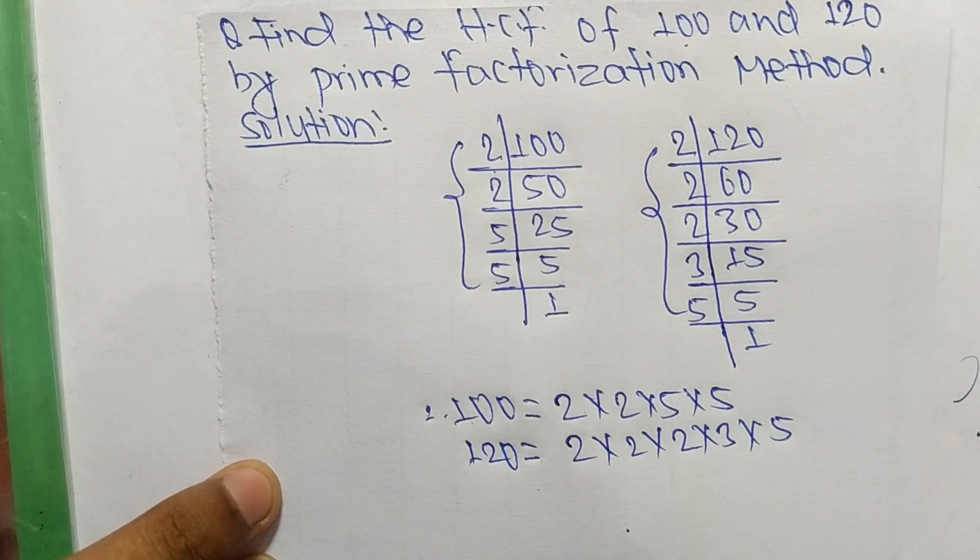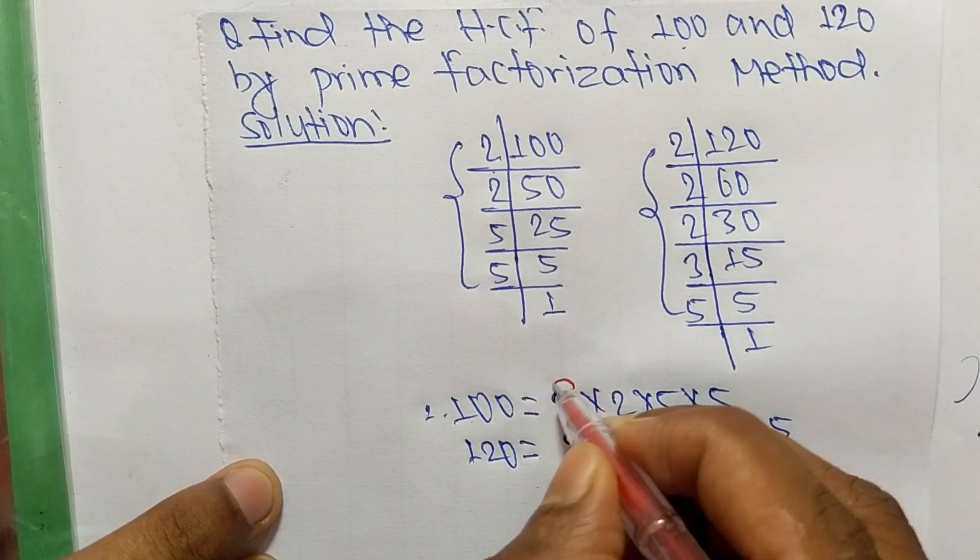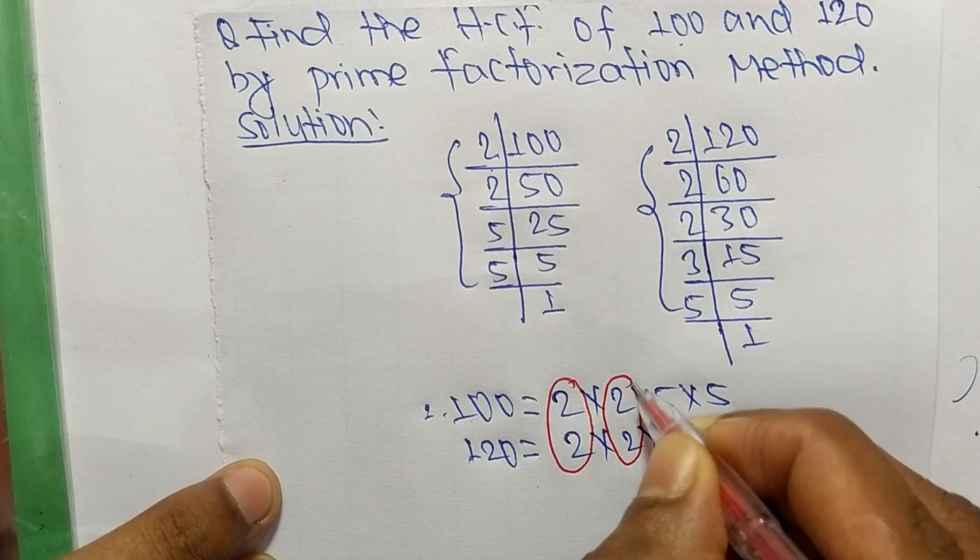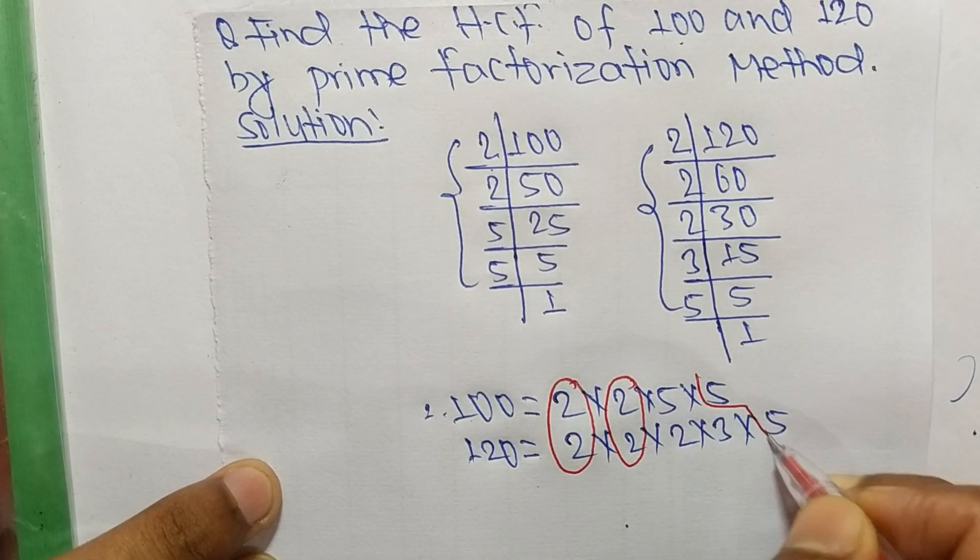So now we select the common factors in this prime factorization. So first common here is 2, second common is 2, and third one is 5.